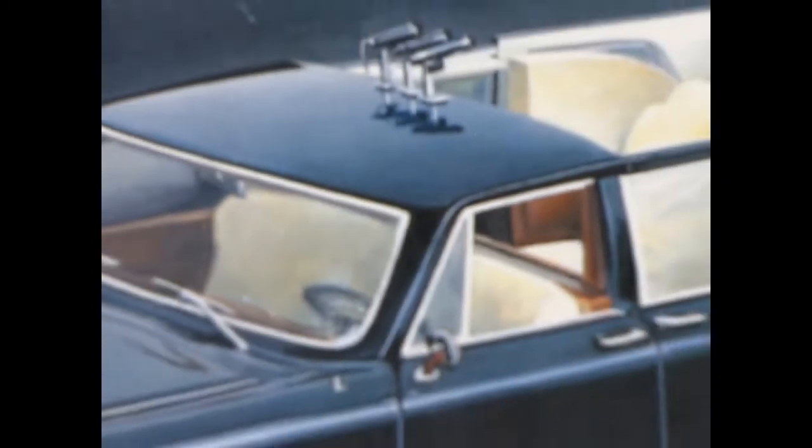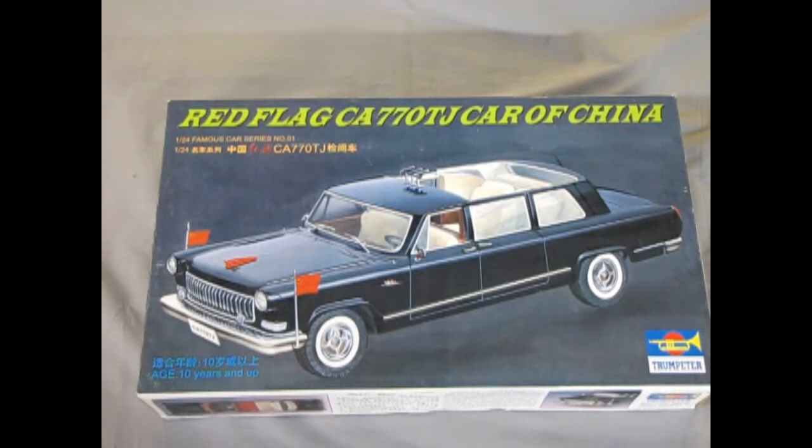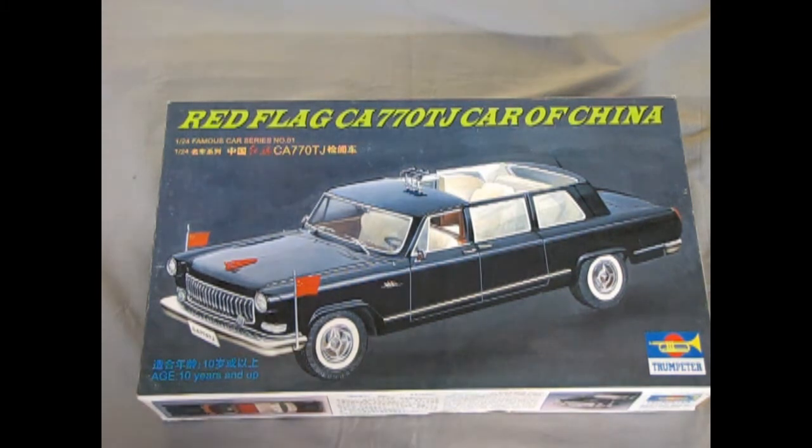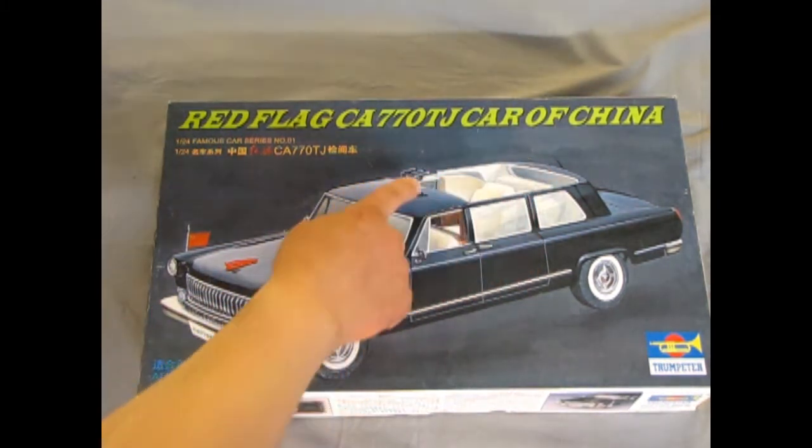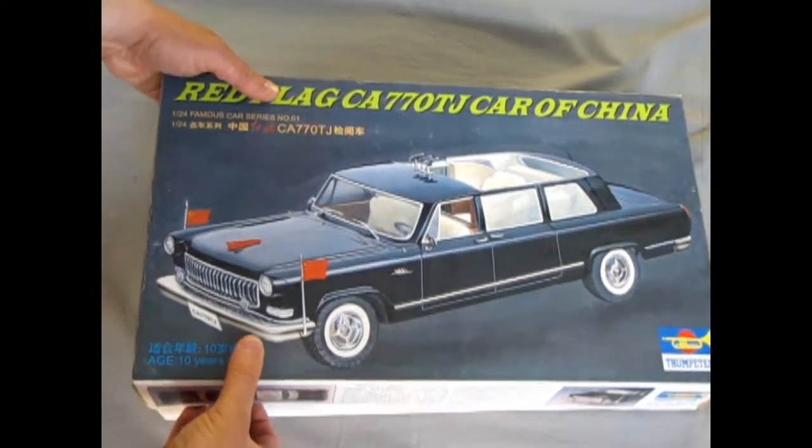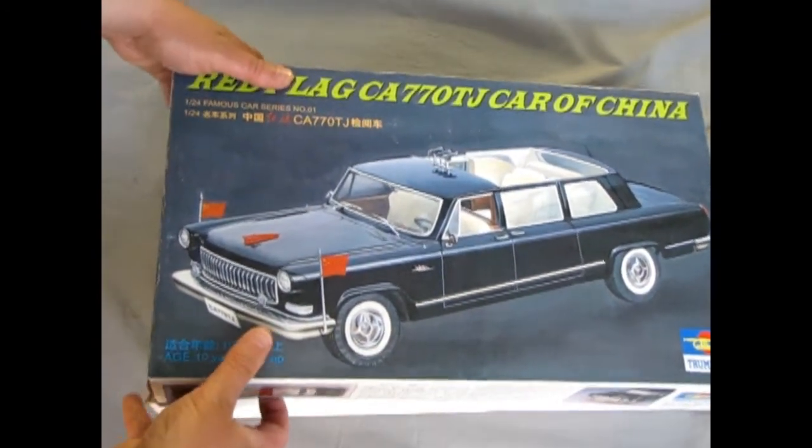Now let's go down and open up the lid on this great model. And welcome back again down to our bench to view the Red Flag CA-770TJ car of China. Now what makes this different from the limo that we've seen previously is that this has the open roof and the microphones for the government official to make the speech in his car.